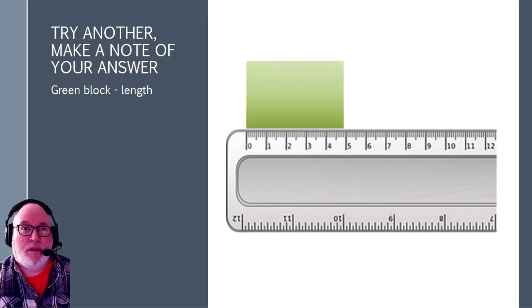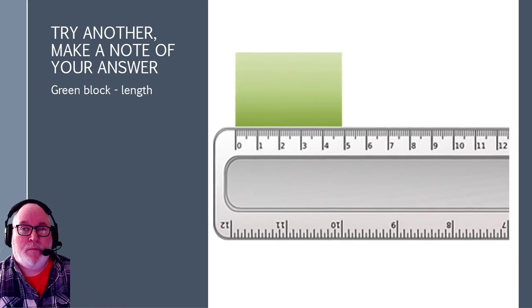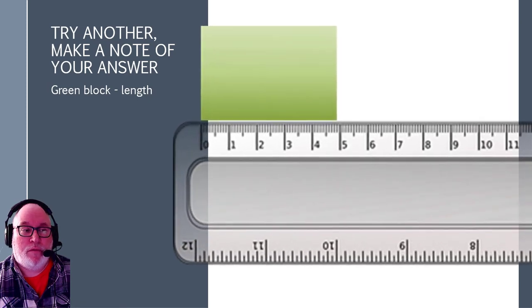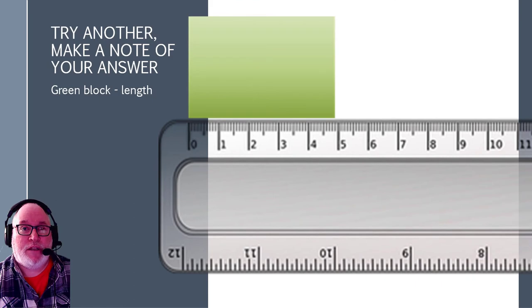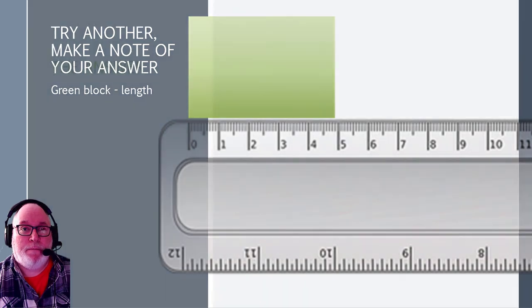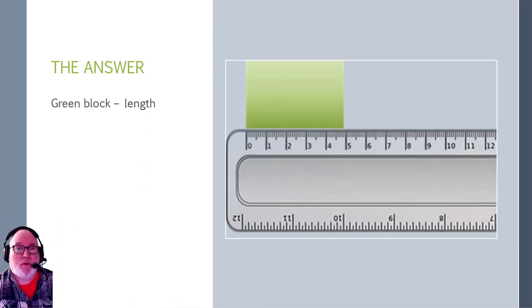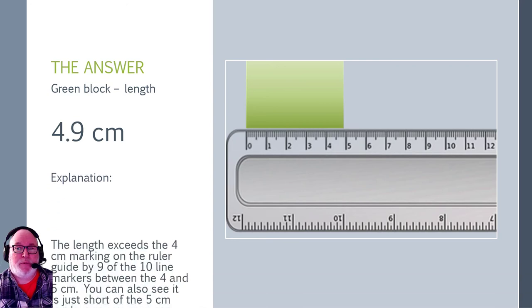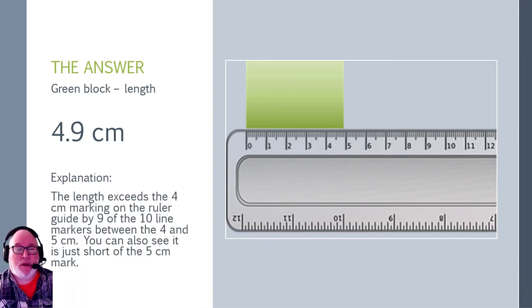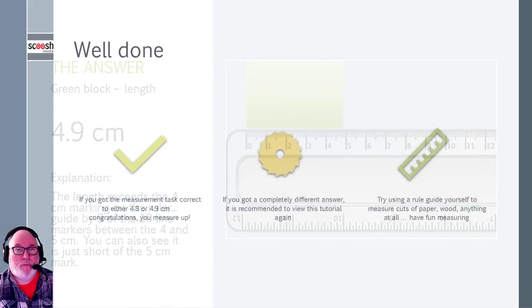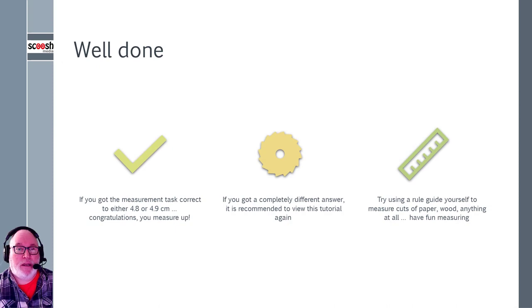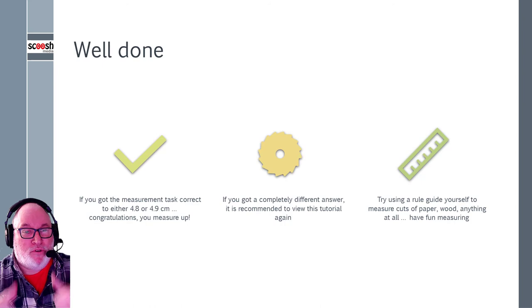So let's have another look at another one. So this one here. A closer look for you. Make a note of your answer. There it is again. So the answer is that length of that green block there is 4.9 centimeters. The explanation is there is 9 out of the 10 line markers past the 4. So it's 4.9. If you've got 4.9, well done. Thumbs up for that.